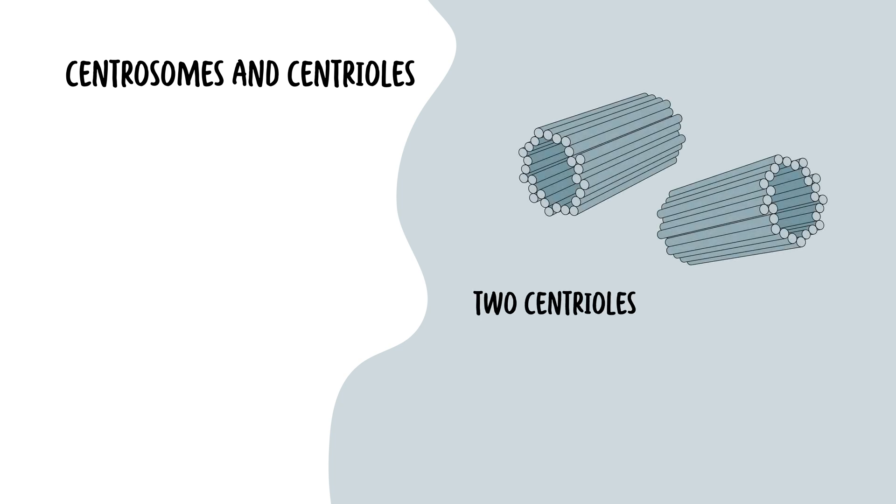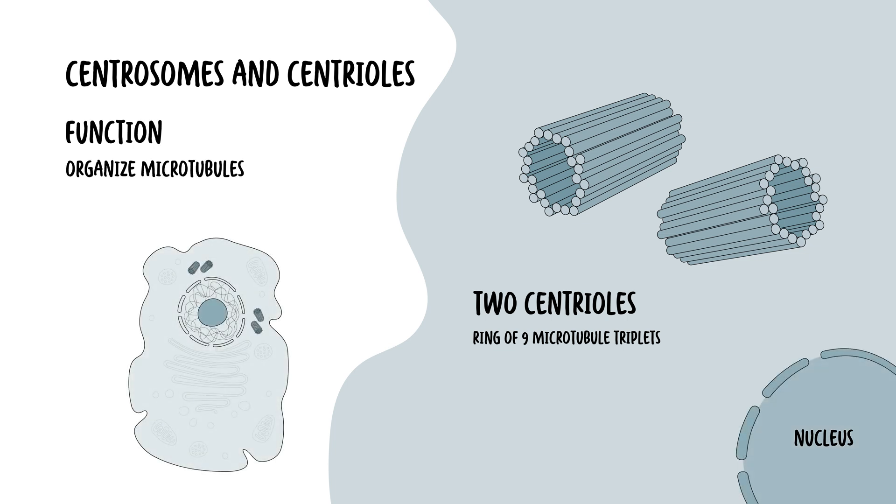Now, talking about microtubules, which again are important in transportation of things, as well as in cell division, I want to introduce you to centrosomes, or the centrioles. The centrosomes are composed of two centrioles, and each made up of a ring of nine microtubule triplets. It is located near the nucleus. Centrosomes organize the microtubules, the cytoskeleton, and play a pivotal role in cell division by forming the mitotic spindle, which separates chromosomes during mitosis, during cell division.